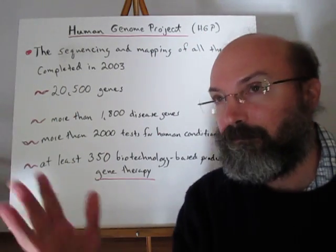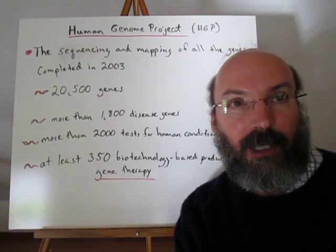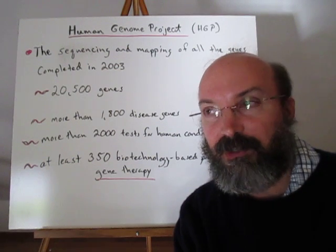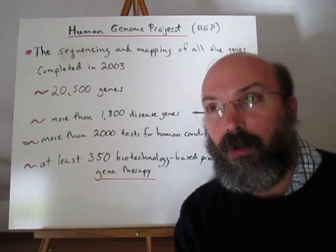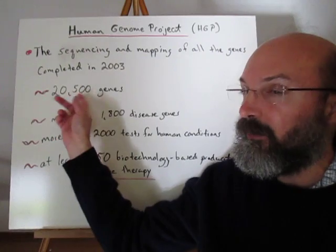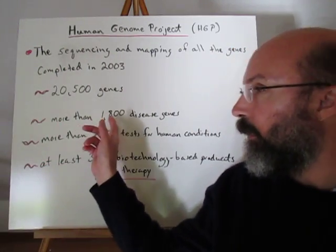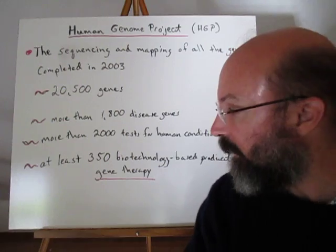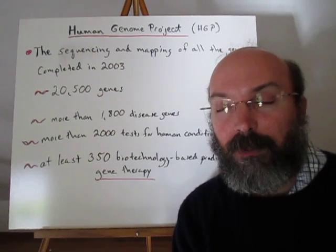The largest contribution that DNA technology has probably made is something called the Human Genome Project — the mapping of every A, C, T, and G in the human genome. They did this with a composite of individuals that represented the human species, so we know on every chromosome what every A, T, C, and G is. From this we've been able to look at all the genes that make up a human being — all the genes that code for all the proteins that make a body. It turns out there are about 20,500 genes identified that make a human being a human being. We've discovered more than 1,800 disease-causing genes, more than 2,000 tests for different human conditions, and over 350 different applications including gene therapy.